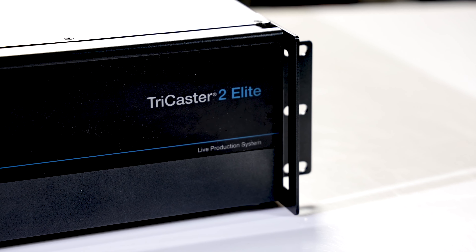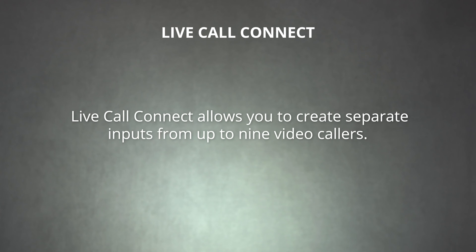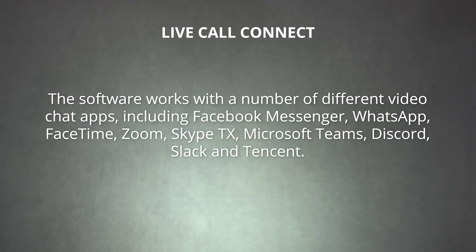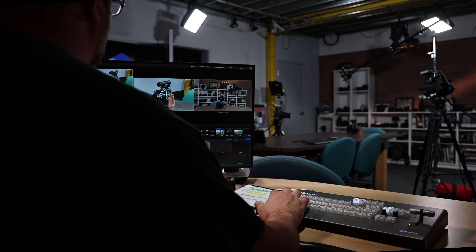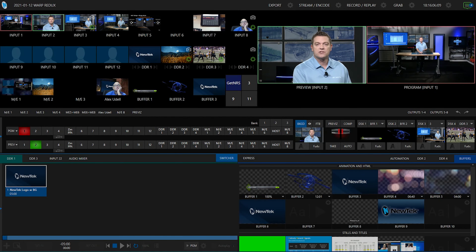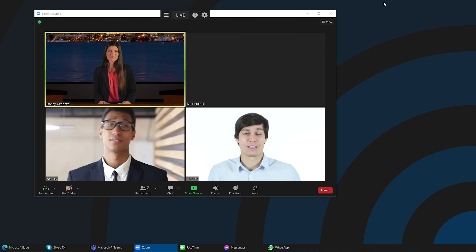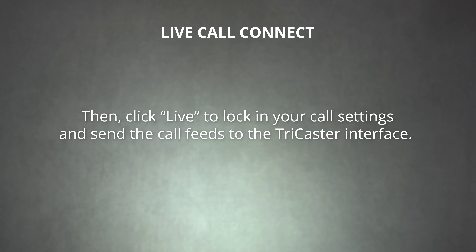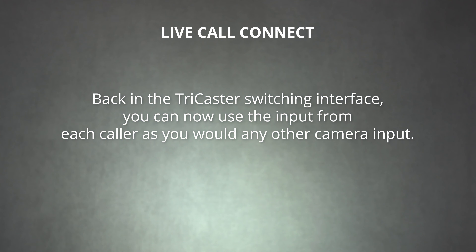The last option we'd like to cover is Live Call Connect. For this, you'll need the NewTek TriCaster 1 Pro or the TriCaster 2 Elite. Live Call Connect allows you to create separate inputs from up to nine video callers. The software works with a number of different video chat apps, including Facebook Messenger, WhatsApp, FaceTime, Zoom, Skype TX, Microsoft Teams, Discord, Slack, and Tencent. To use this feature, open up your TriCaster interface and access the app desktop from the workspace options. Then open up your virtual calling app of choice and connect to your guests. Once your call is connected, click on the gear menu at the top of the screen and select assign callers to inputs. Then click Live to lock your call settings and send the call feeds to the TriCaster interface. Back in the TriCaster switching interface, you can now use the input from each caller as you would any other camera input.